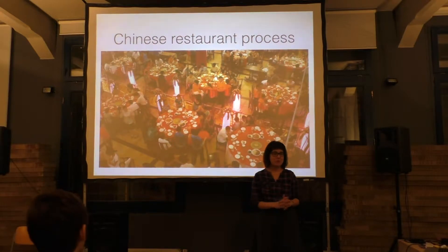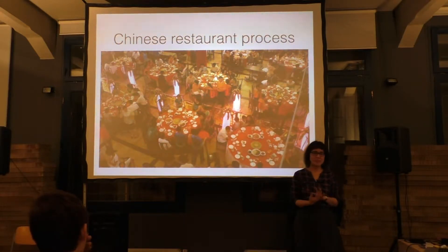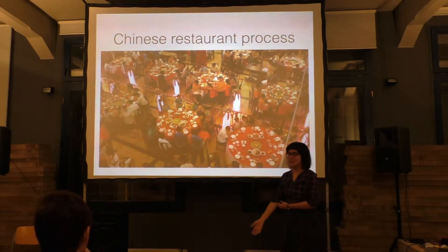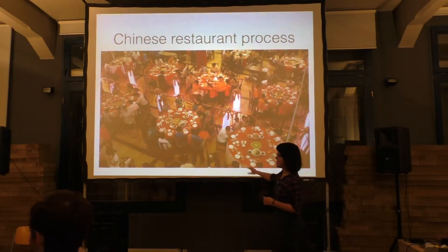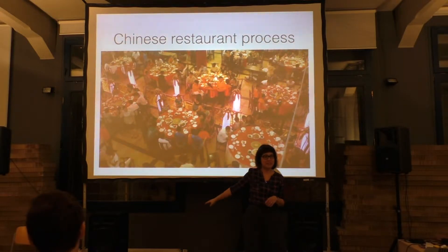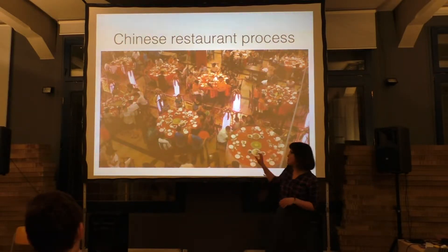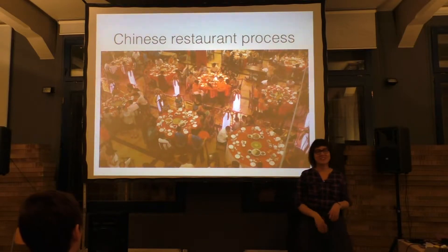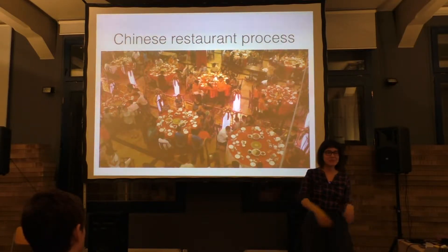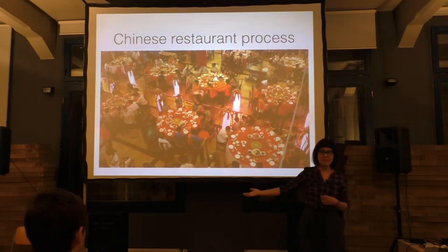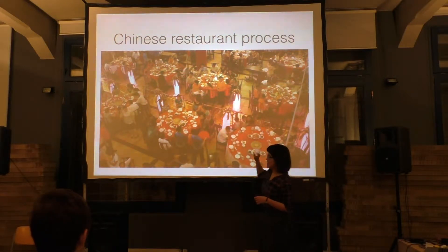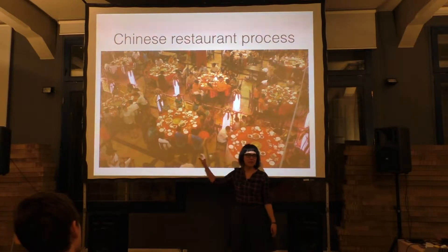For me, the easiest way to understand a Dirichlet process is something called the Chinese Restaurant Process. If you go more into Bayesian non-parametrics, you will find people use nice metaphors like a Chinese restaurant — there's also an Indian buffet process. The Chinese restaurant process is a way of sampling from a Dirichlet process. In a large Chinese restaurant, there are seemingly infinite tables and people come all the time with different numbers sitting at each table.